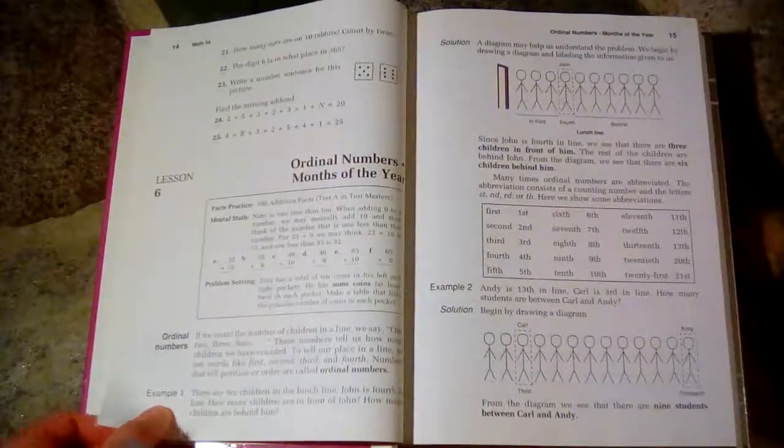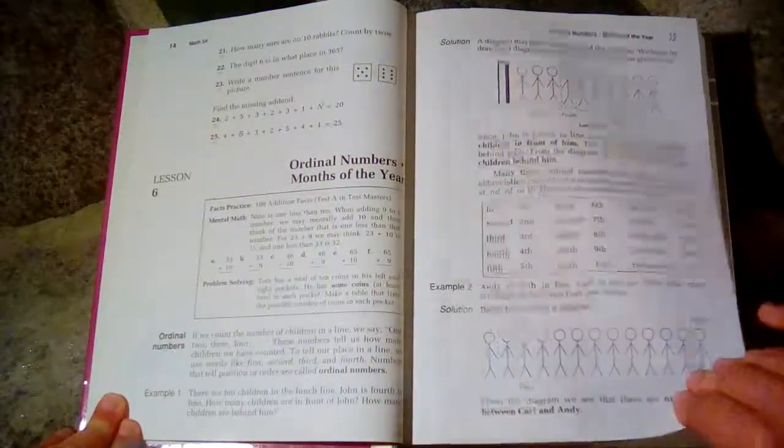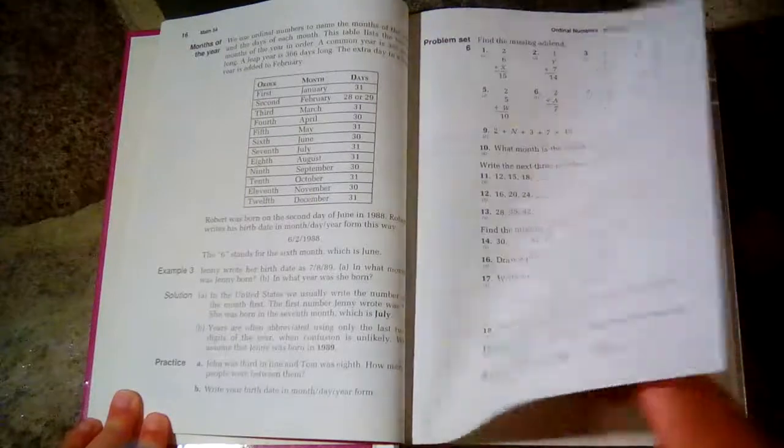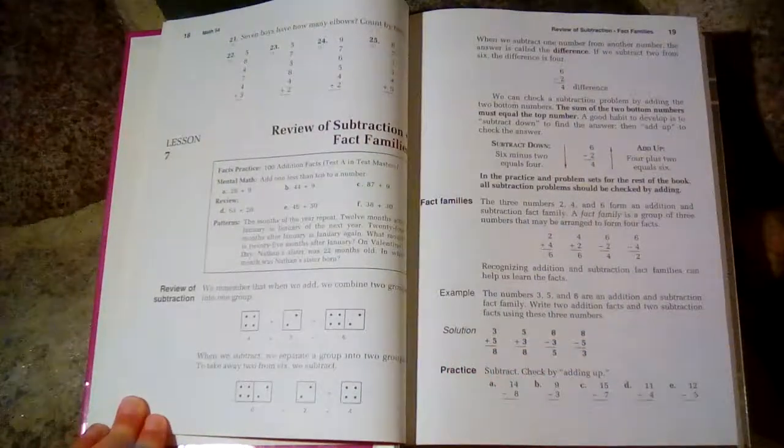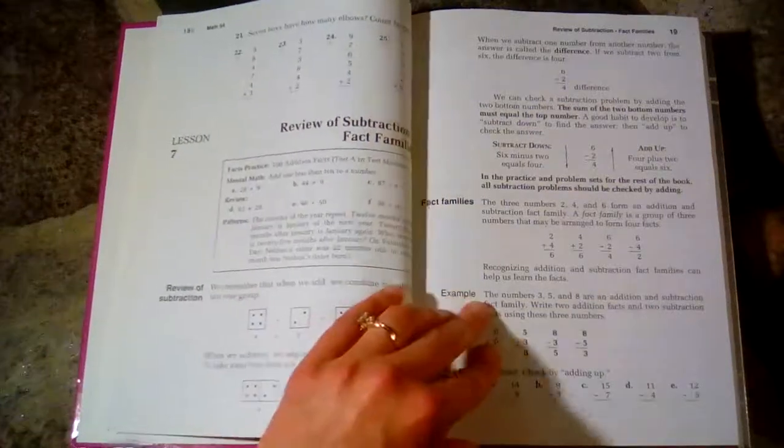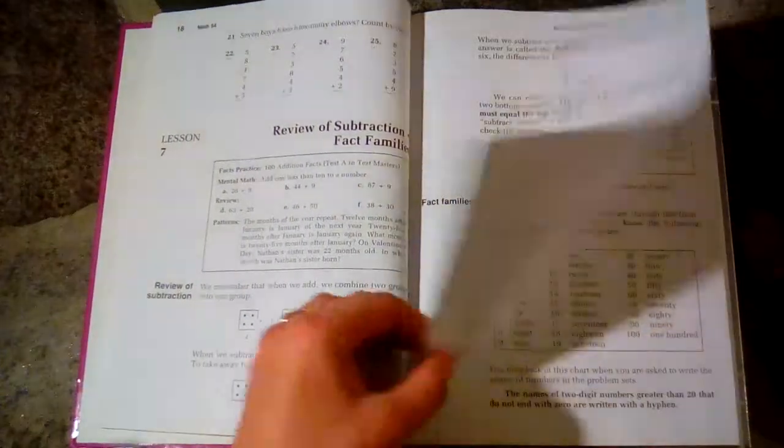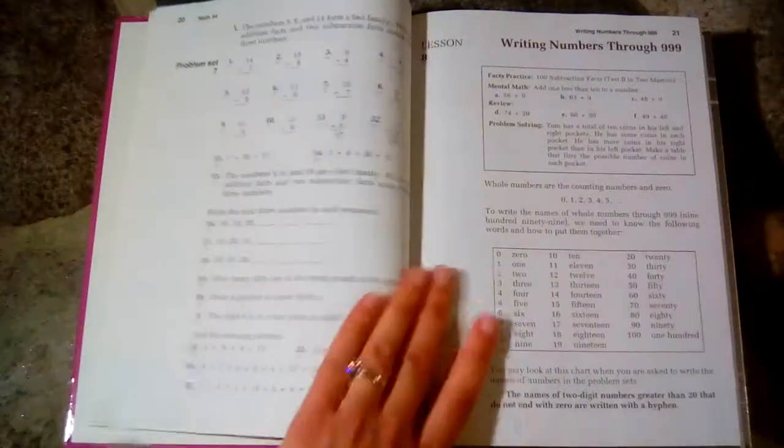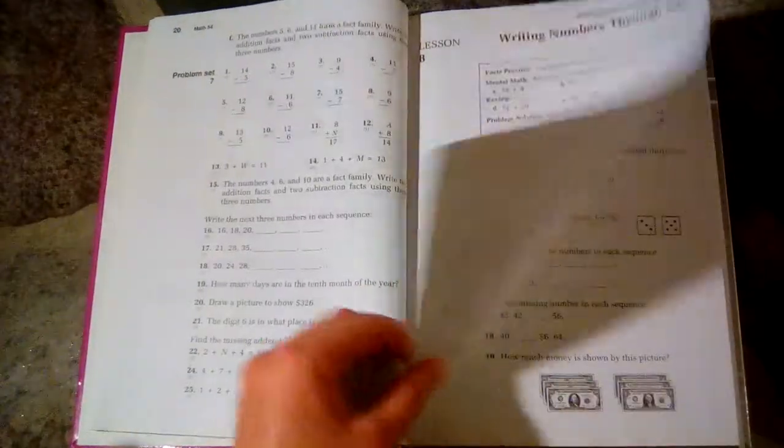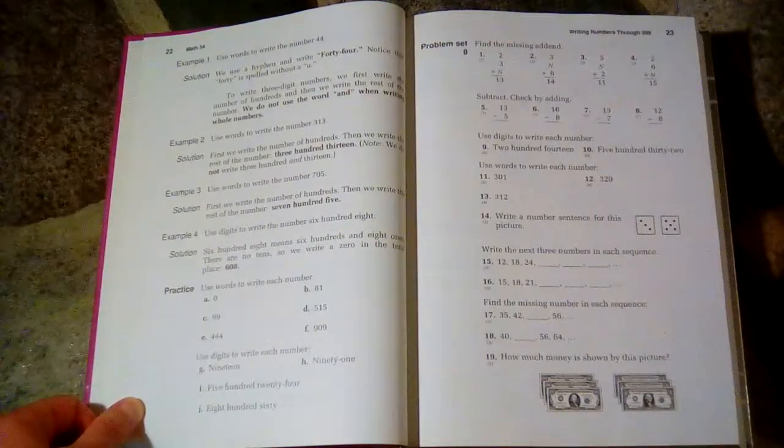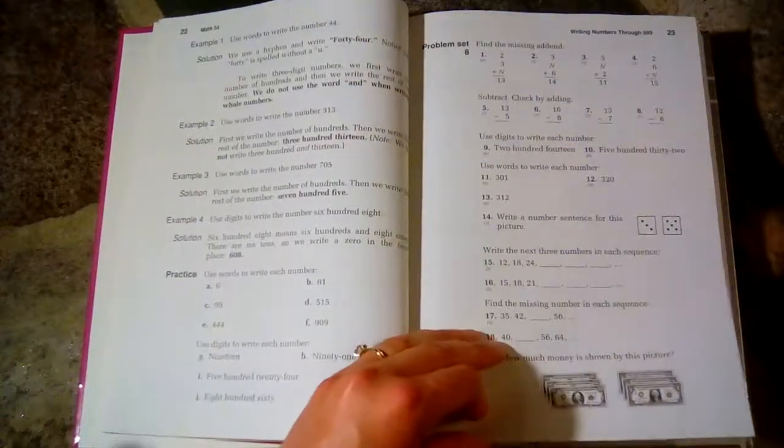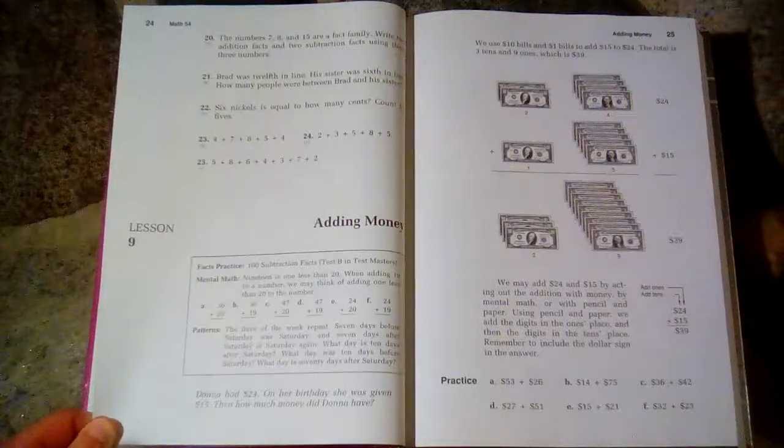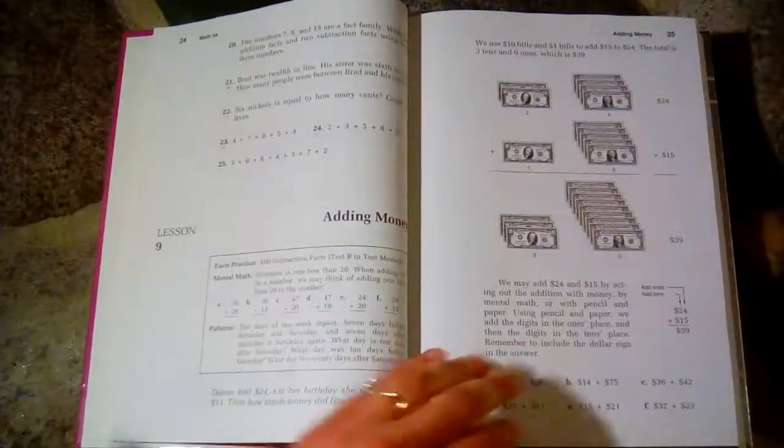One thing you will notice about this book versus the previous ones is there's a lot more problems and the problems are a lot more complex. When we made the switch from Math 3 to Saxon Math 5-4, it was actually quite a difficult transition for my daughter. It took her most of the school year to really start doing okay with this program because it was such a change.